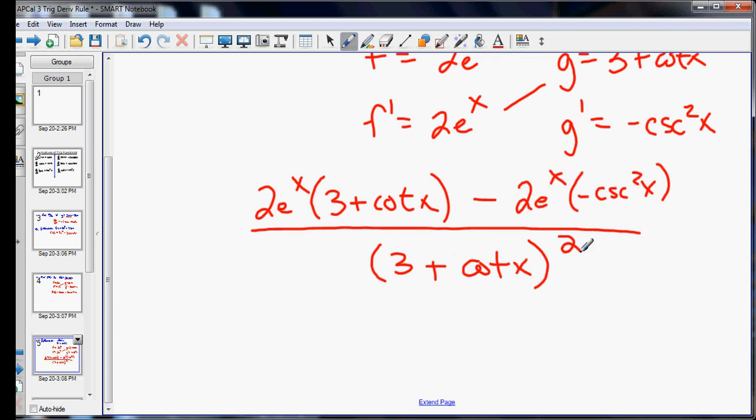And the only simplifying you may have to do on this is, since there is a negative here and here, we could combine them, just make this plus, and just change this to times cosecant squared x. Pulling the negative out front, making it a plus right there.